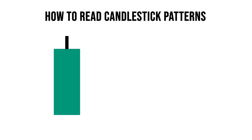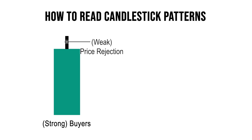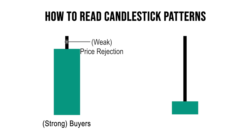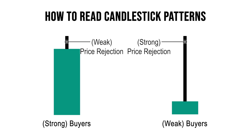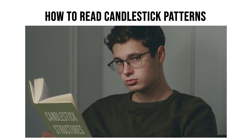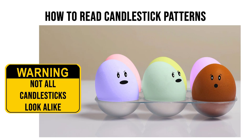In this first example, the candlestick body tells us that there are strong buyers in control since the close is located much higher than the open. The short shadow tells us that there is weak price rejection — the highs showed that price was raised to this level before sellers were able to push it back a bit lower until the candlestick closed. In this next example, we see the same wick and body but it signals something entirely different. The body shows the buyer still closed the session in control, but this time there was a significant amount of selling pressure which caused a strong price rejection from the highs down.